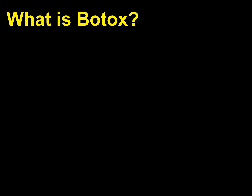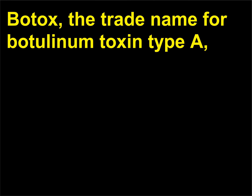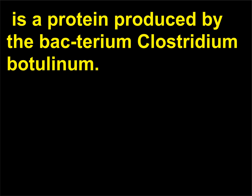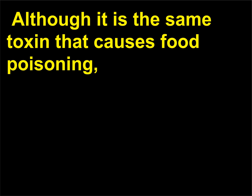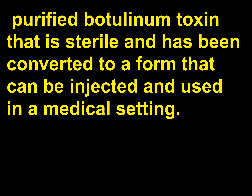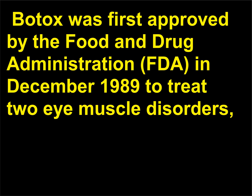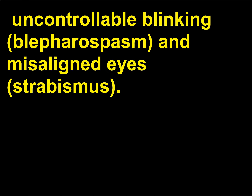What is Botox? Botox, the trade name for Botulinum Toxin Type A, is a protein produced by the bacterium Clostridium botulinum. Although it is the same toxin that causes food poisoning, purified botulinum toxin that is sterile has been converted to a form that can be injected in a medical setting. Botox was first approved by the Food and Drug Administration in December 1989 to treat two eye muscle disorders: uncontrollable blinking (blepharospasm) and misaligned eyes (strabismus).